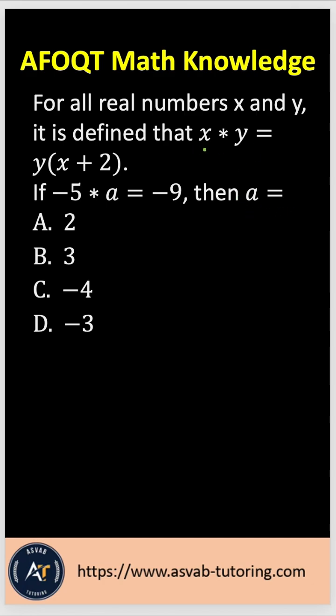The rule says first one asterisk second one equals second one times the quantity first one plus 2. You have to follow exactly the same formula here. So let's do that.